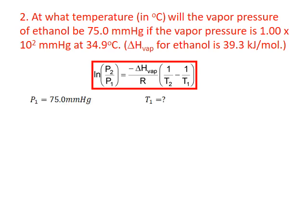We're given a pressure point of 75 millimeters of mercury and asked to find the temperature that corresponds to this vapor pressure. Our second pressure and temperature corresponds to 100 millimeters of mercury and 34.9 degrees Celsius. All of our temperatures must be in units of kelvin, so we add 273.15 to our degrees Celsius for the second temperature to get 308.05 kelvin.